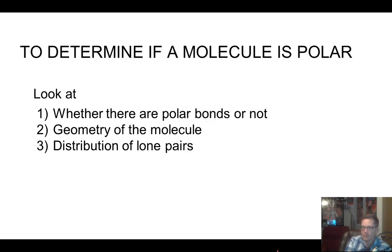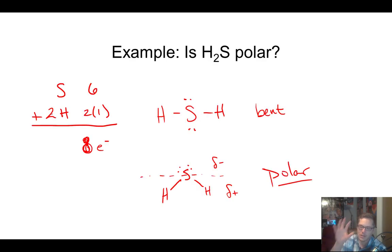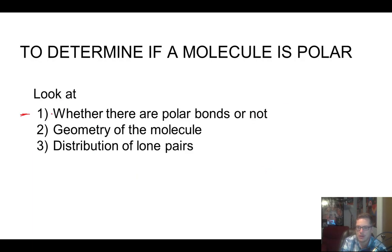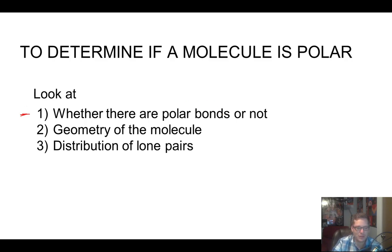So here's your guideline for deciding whether a molecule is polar: first, decide whether or not you have polar bonds — though this isn't definitive proof, since you can have polar bonds in a non-polar molecule. Then you've got to look at the geometry, because that's really where polarity comes into play. And then look at the distribution of lone pairs — like with H2S, the bent geometry and lone pairs all at the top give a definitive negative side on top. Next video we'll be talking about intermolecular forces, so make sure you really understand polarity first. Do your practice problems and let me know if you have any questions.